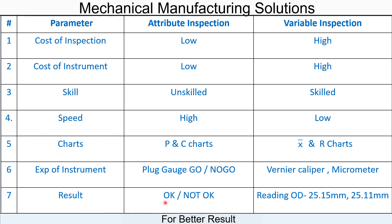The result for attribute gauge is simply okay or not okay. Okay means the part will move to the next stage; not okay means the part will be kept and moved to the rejection or rework area. For variable inspection, a dimension reading gives a clear picture about the product — for example, readings like 25.15 or 25.11 are obtained by the variable inspection method.